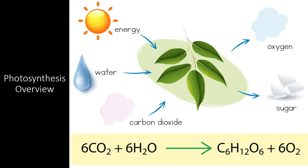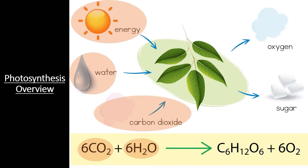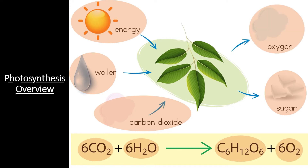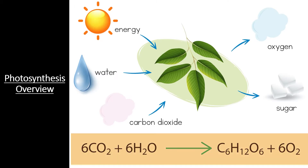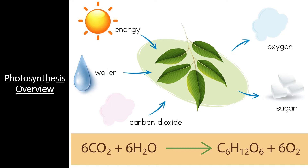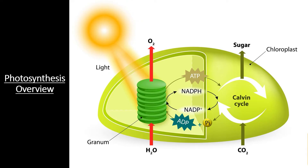Before we dive into the different reactions that make photosynthesis possible, let's go over a quick overview of the entire process. In its essence, photosynthesis takes water, carbon dioxide, and energy from the sun to create glucose molecules while releasing oxygen as a byproduct. While the overall reaction is simple enough to understand, the actual process requires dozens of individual reactions and enzymes that work sequentially to recombine carbon atoms from carbon dioxide into much larger glucose molecules. These mini-reactions can be broken into two sets: the light-dependent reactions and the light-independent reactions.